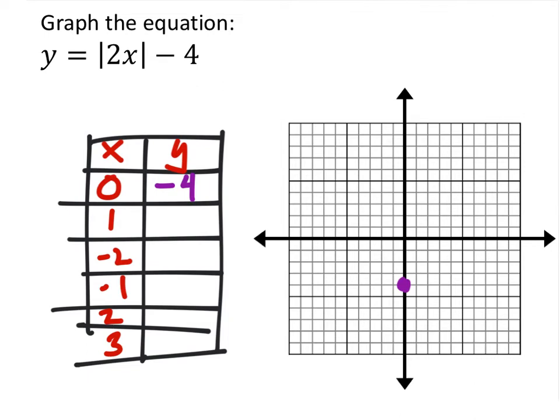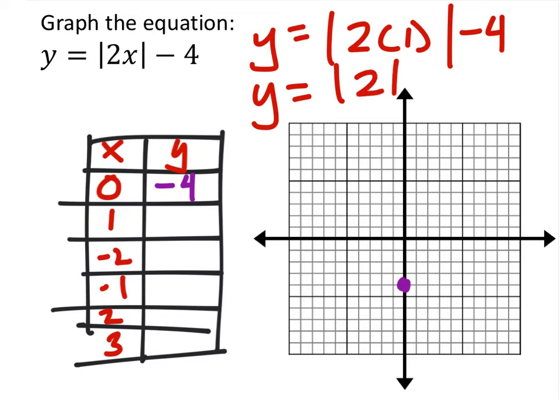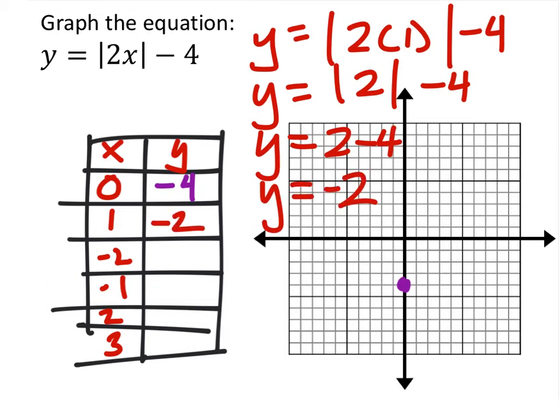Let's try the next one. So y equals the absolute value of two times one minus four. So two times one is two minus four. What's the absolute value of negative two? Two. So y equals two minus four, which would be negative two. So let's go and graph that point, one negative two, right here.